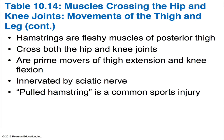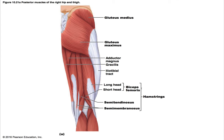The hamstrings are fleshy muscles of the posterior thigh consisting of the biceps femoris, the semitendinosus, and the semimembranosus. They cross both the hip and knee joints and are prime movers of thigh extension and knee flexion. They have a common origin and are innervated by two nerves branching off the sciatic nerve — the tibial and common fibular nerves, wrapped in a common sheath. Pulled hamstrings are common sports injuries in athletes who run hard, such as football halfbacks. You can see all three muscles in the illustration: the biceps femoris with its long and short head, the semitendinosus, and the semimembranosus.